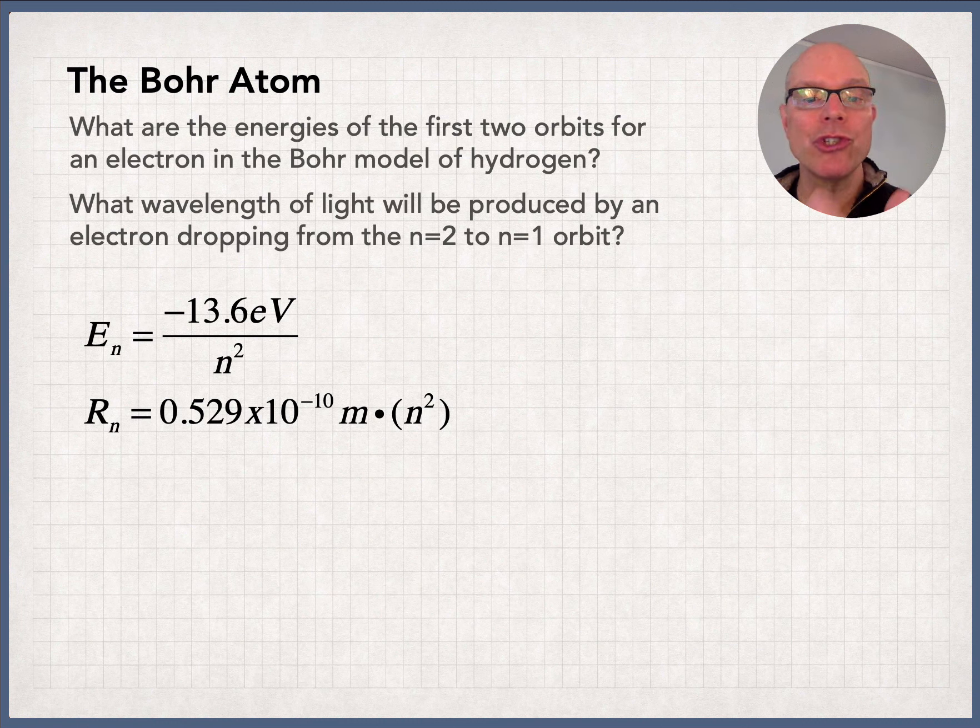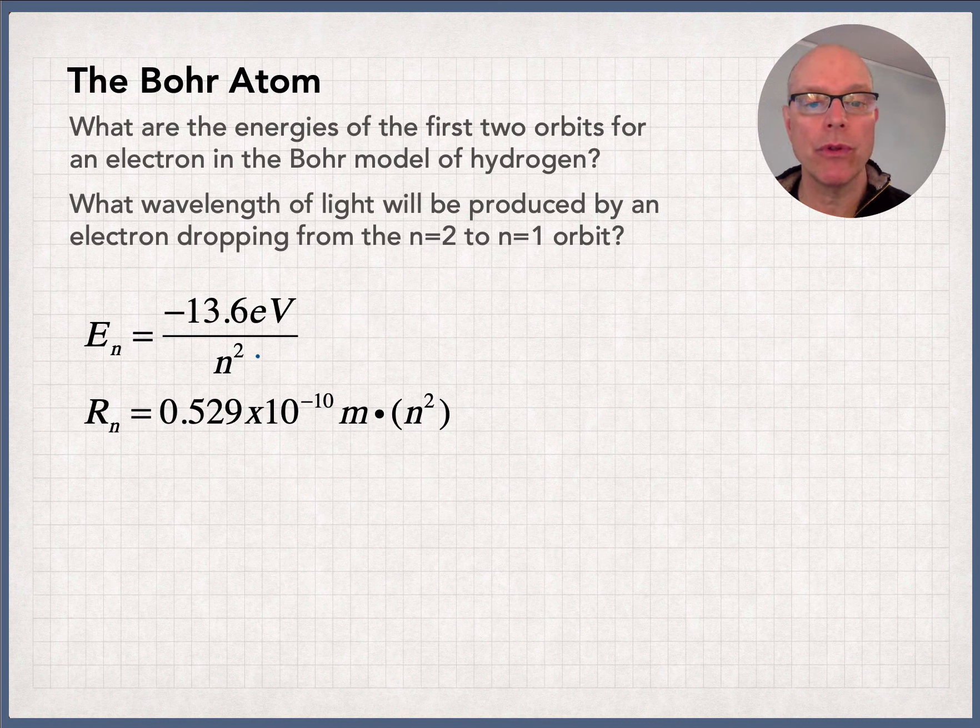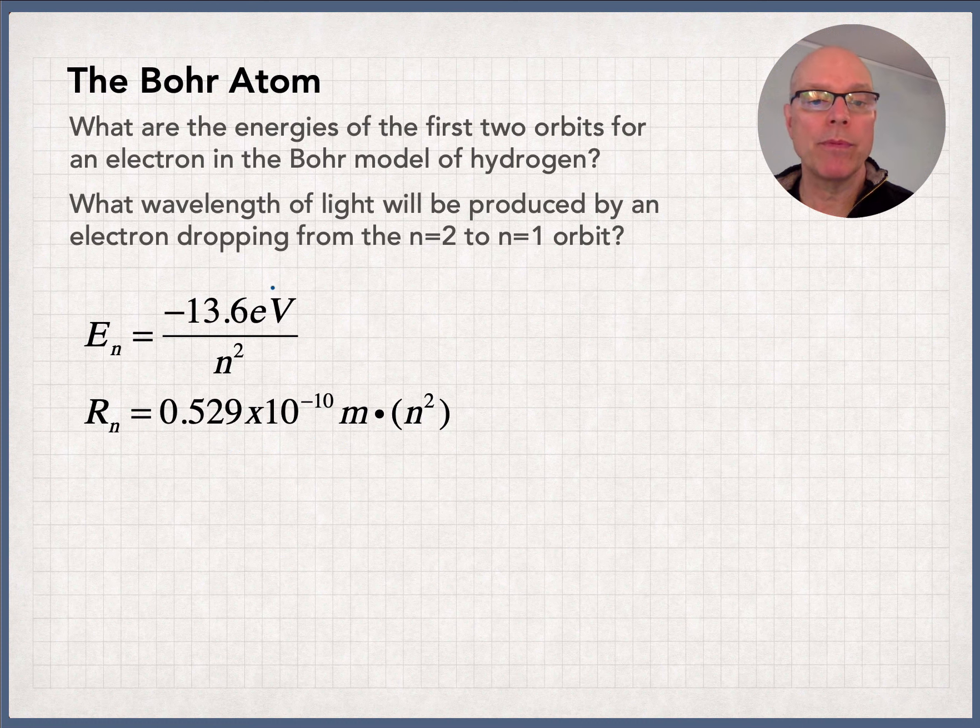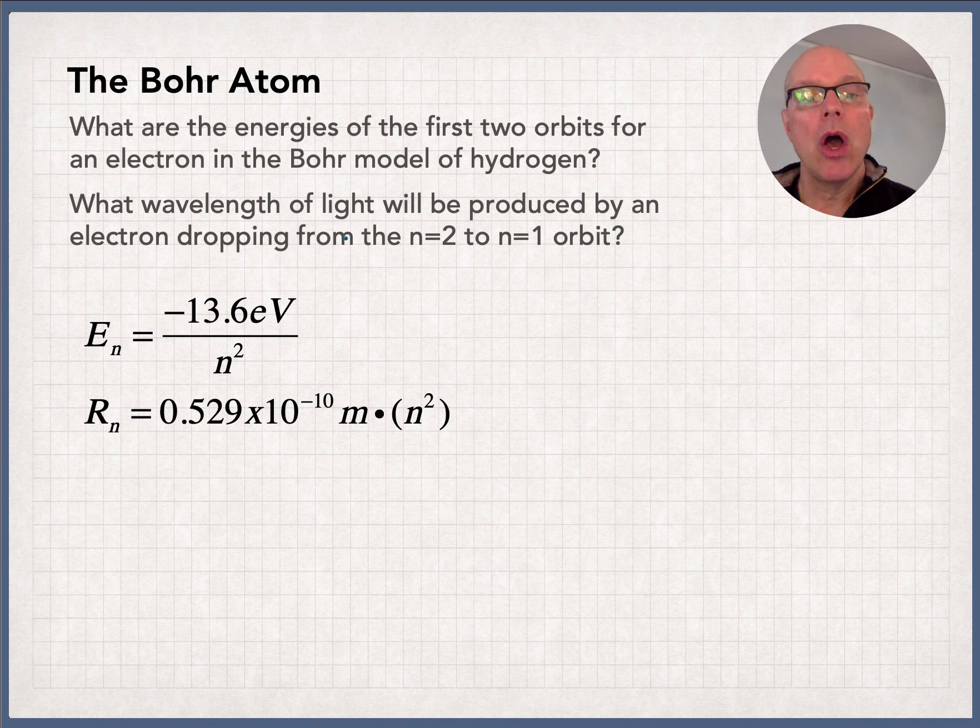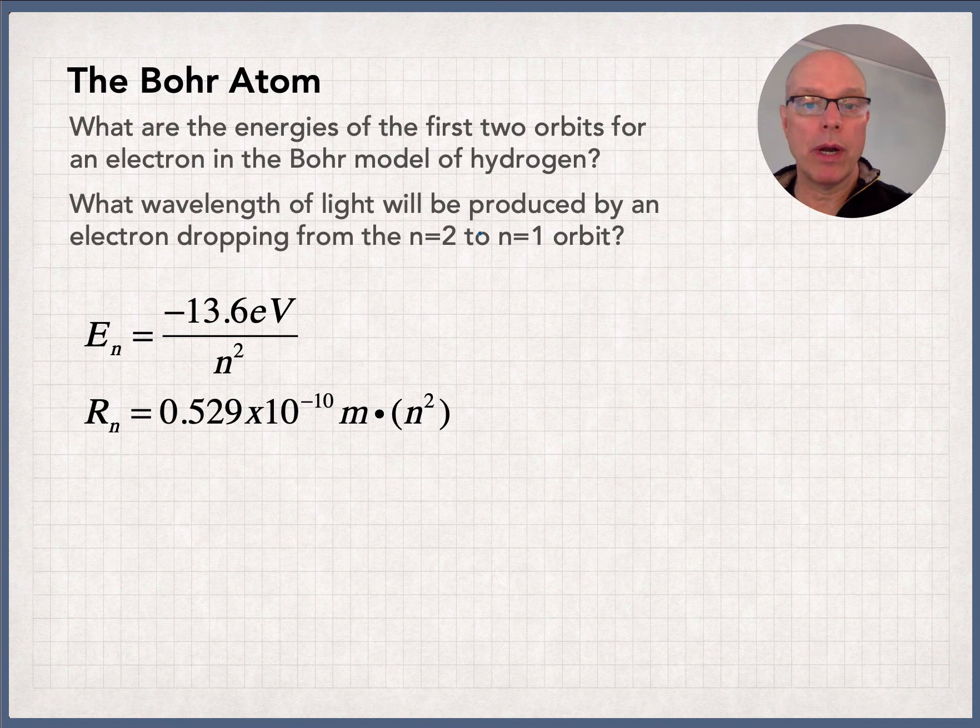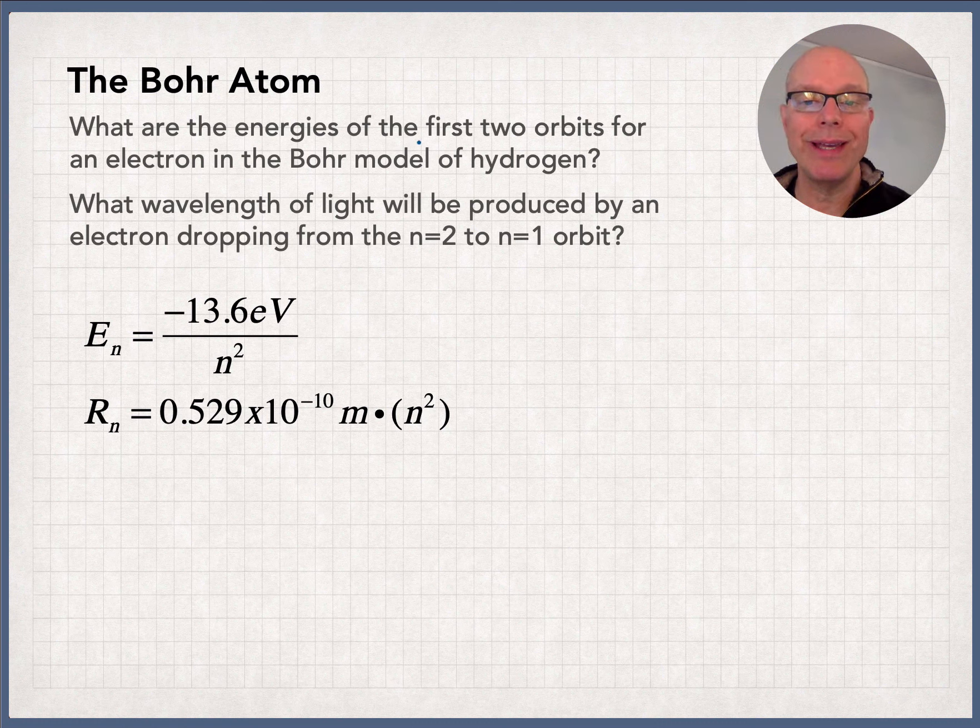Here's what he came up with. The energy of these allowed stationary states is given by this formula, negative 13.6 electron volts divided by n squared. So n is the number of the state. And the radius, how far that electron is away from the center of the atom, is given by this formula. The one that we spend most of our time is this first one. What we're basically going to do in this slide is a calculation you're going to do versions of in class. What wavelength of light will be produced by an electron that drops from n equals 2 down to n equals 1? To answer that, you first have to know what the energy of each of those states is.